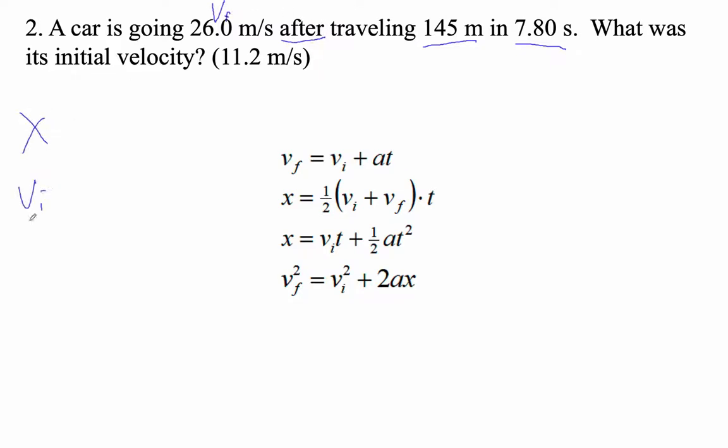So I'm going to say our final velocity is 26.0. And then 145 meters, that's our x. This is our time. Anything in meters is going to be x. Anything in seconds will be time. So x is 145 meters. That's meters per second. Time is 7.80 seconds. And then we want to find the initial velocity.